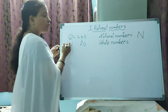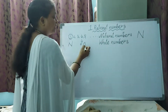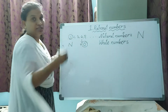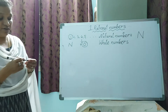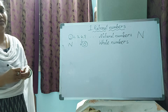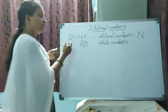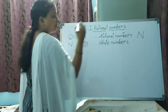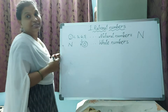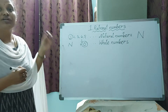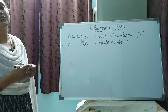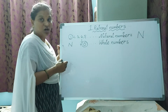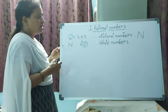The smallest whole number is 0. What is the highest whole number? We can't define it — just like natural numbers, it goes to an infinite count, so we can't define the highest whole number.